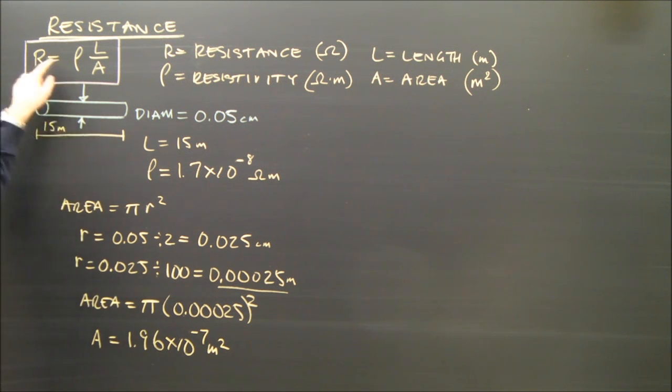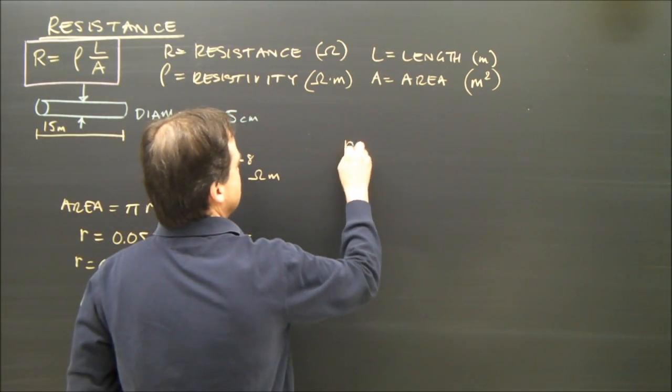I have the area. I can now go into the formula because I have rho, L, and A. So what is the resistance of this piece of wire?